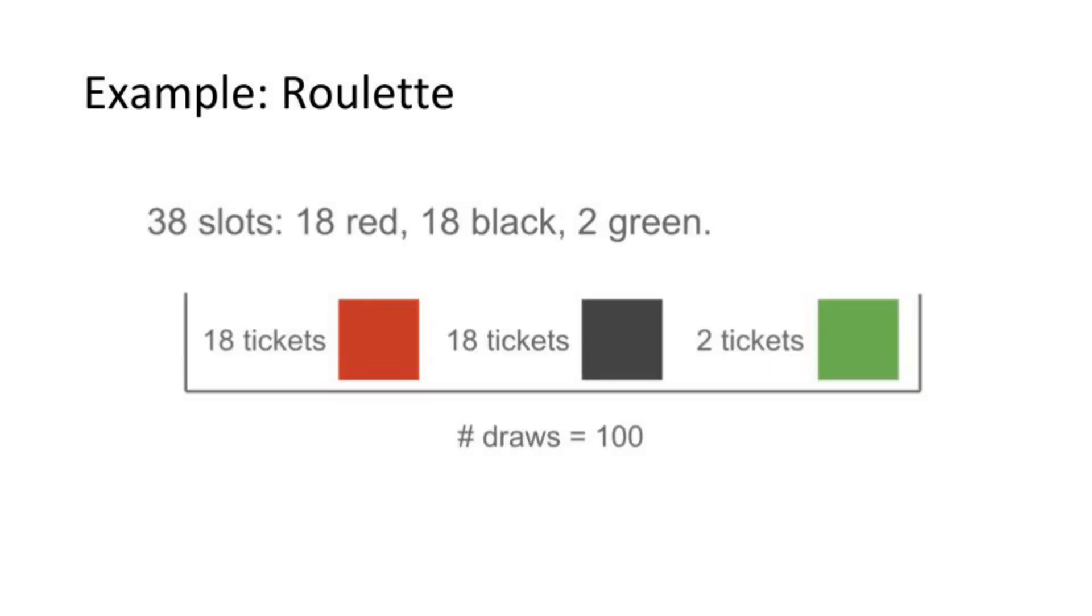You might immediately jump into drawing a box that looks like this. There's 18 reds, 18 blacks, and two greens. And then think about pulling tickets out of this box. But don't jump too fast on this because this model is wrong. Think first, what exactly are you calculating?